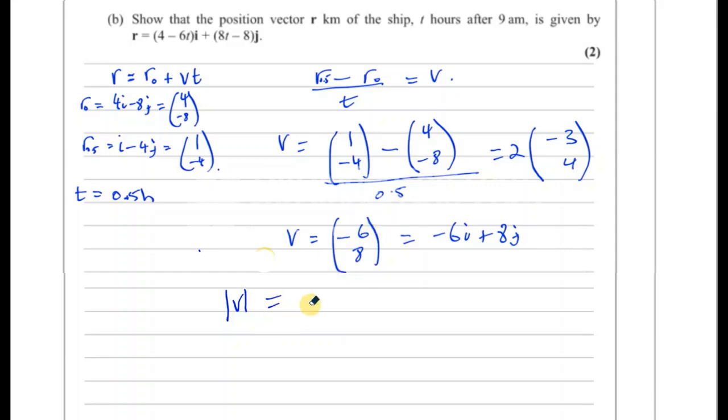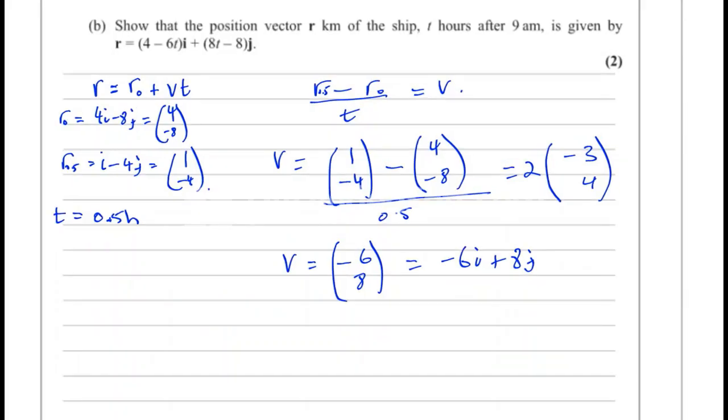So the magnitude of the velocity will be given by, so you use Pythagoras' theorem. You have to find the square root of minus 6 squared plus 8 squared, which is, that's 36 plus 64, which is 100. The square root of 100, which is 10 kilometers per hour. And there's the answer for the speed of the ship. So the speed of the ship is 10 kilometers per hour. Now, this is part A done.